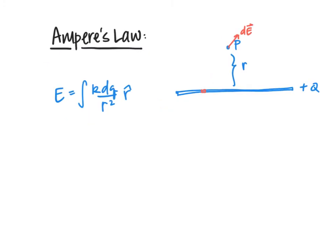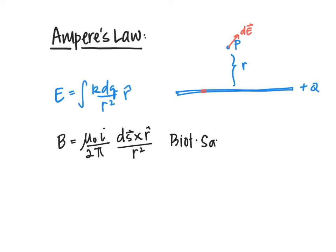Similarly, we can find the magnetic field due to a long current-carrying wire using the Biot-Savart law, which states that B equals mu-naught i over 2 pi times ds crossed with r-hat over r squared.